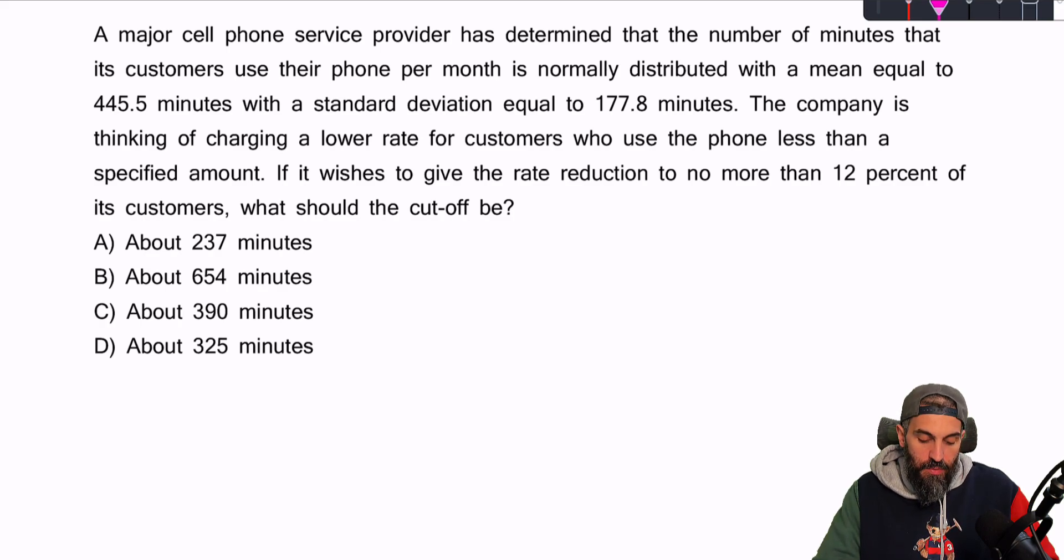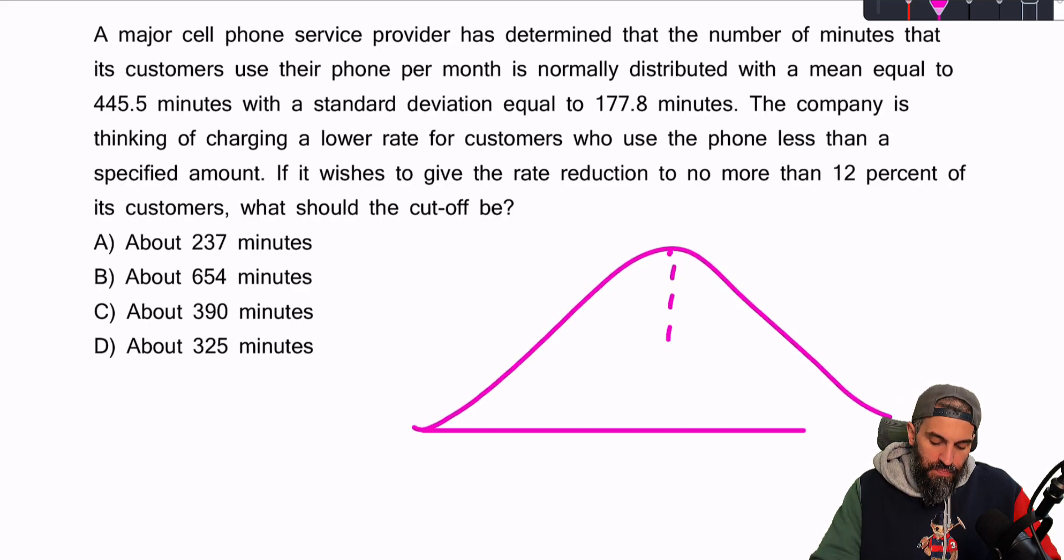Question number 3. A major cell phone service provider has determined that the number of minutes that its customers use their phone per month is normally distributed with a mean equal to 445.5 minutes and a standard deviation of 177.8. The company is thinking of charging a lower rate to customers who use the phone less than a specific amount of time. If it wishes to give a rate reduction to no more than 12% of customers, what should the cutoff be? So here what we're looking for is the 12th percentile. What number of minutes do only 12% of customers fall below? So that would be on the left hand side of the mean basically saying that this area represents 12% of all customers. What is the value of X that separates that 12% from the rest?